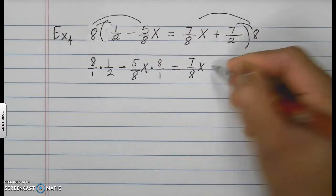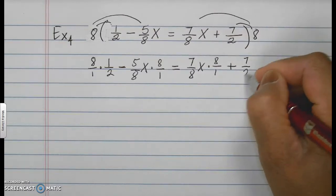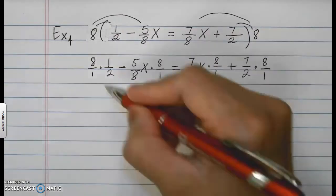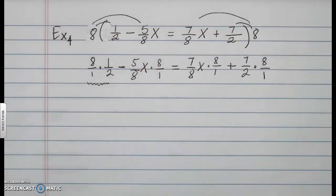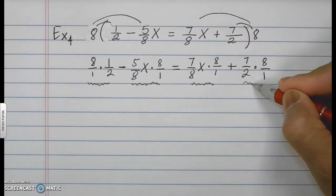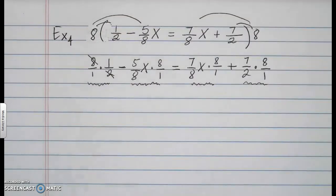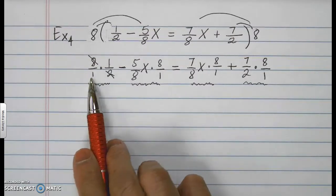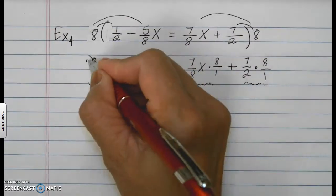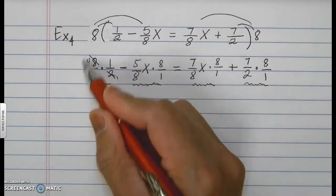8 over 1 times 1 half, and you will have minus 5 over 8x times 8 over 1. 7/8x times 8 over 1 plus 7 over 2 times 8 over 1. This now will turn into, well, it's 8 times 1 is 8, 1 times 2 is 2, and 8 over 2 is 4. Therefore, your answer here is going to be a 4. The 4 is just for this one.